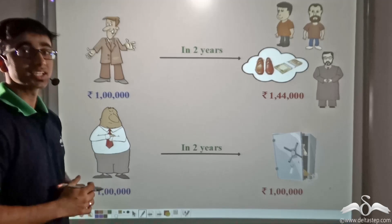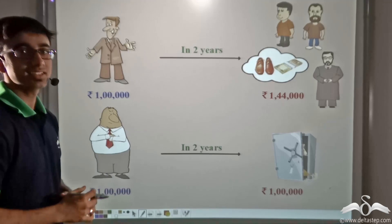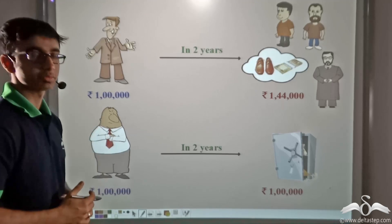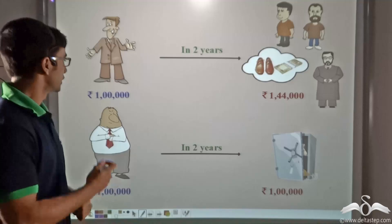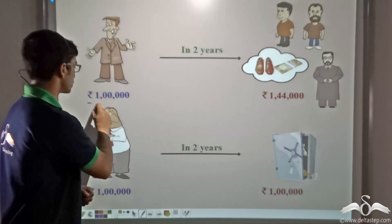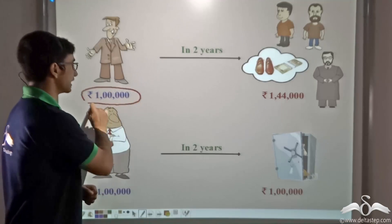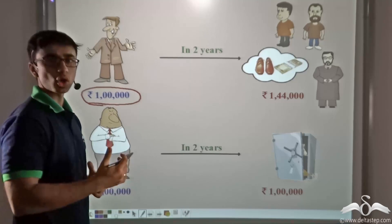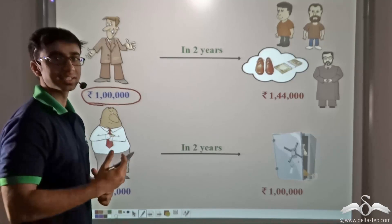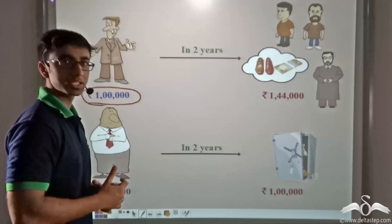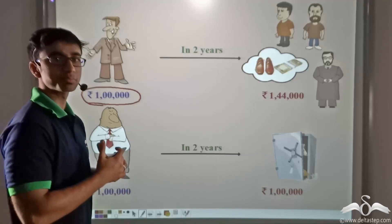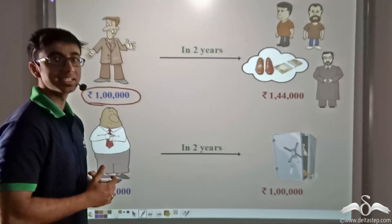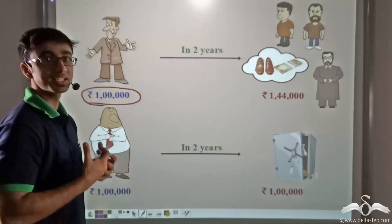We have seen that Narayan is an expert businessman. Now Narayan is also a money lender. So through all his operations — that is by lending money as well as through his business — he can make his money grow.